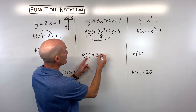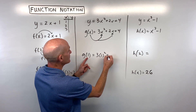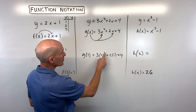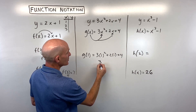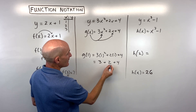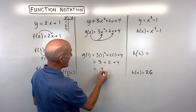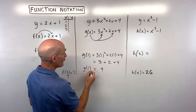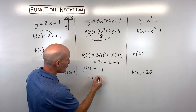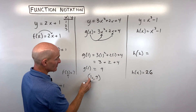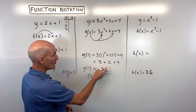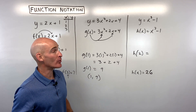In this case, we replace x with 1 — notice I'm putting it in parentheses. Then simplify: 1 squared is 1, times 3 is 3, plus 2 times 1 which is 2, plus 4. So we get 5 plus 4, which is 9. So g of 1 equals 9. The 1 is the x value, the 9 is the y value. You could write this as a coordinate — input, output; independent, dependent.